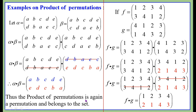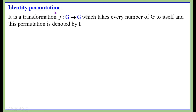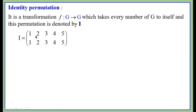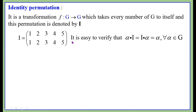Thus the product of permutations is again a permutation and belongs to the same set. Identity permutation: it is a transformation f from G to G which maps every element of G to itself. This permutation is denoted by i. That is, i equals the permutation with first row 1 2 3 4 5 and second row 1 2 3 4 5 on 5 symbols. It is easy to verify that alpha times i equals i times alpha equals alpha for all alpha in G — that is, i is the identity permutation.